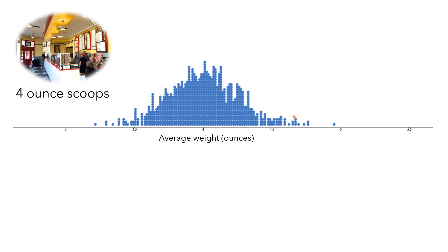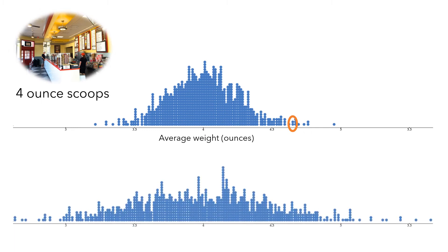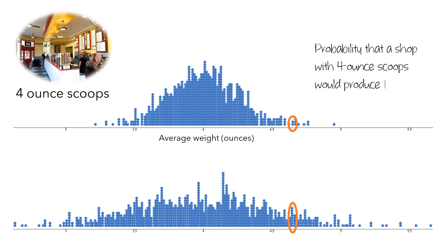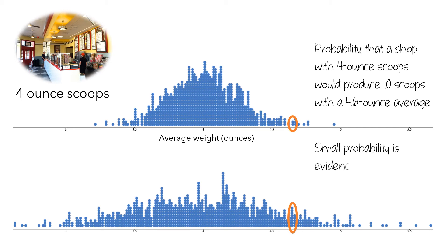From such an ice cream shop, getting a 10-scoop average of 4.6 ounces might be a little surprising. But if the ice cream shop had a little more variation, then maybe it would be less surprising to get a 4.6-ounce average. And this surprisingness is something we can quantify using probability. Specifically, we could compute the probability that a shop with four-ounce scoops would produce 10 scoops with a 4.6-ounce average. If this probability is small, then this is evidence that they're not really four-ounce scoops. This probability is central to making statistical inferences, so it has a special name — it's called a p-value.